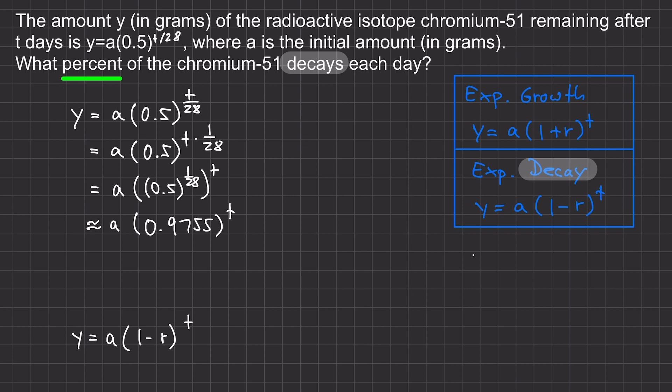So, we can write 1 minus r equals 0.9755. And after adding r to both sides we get 1 equals 0.9755 plus r. Subtracting 0.9755 from both sides gives us 0.0245 equals r.